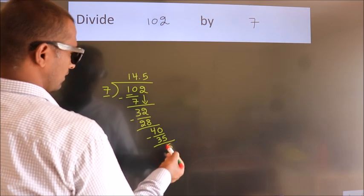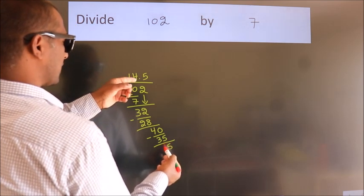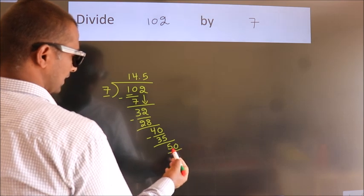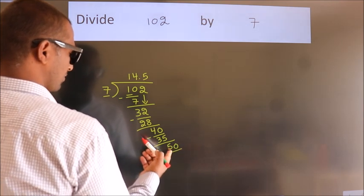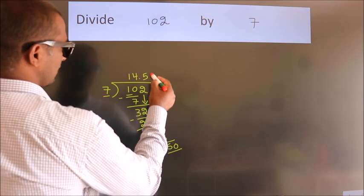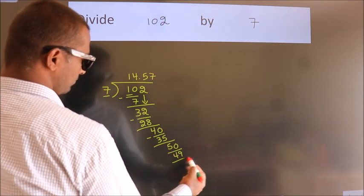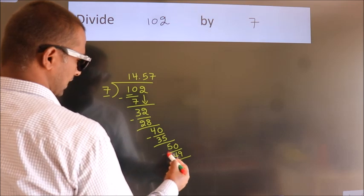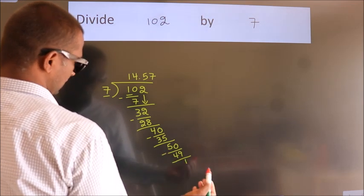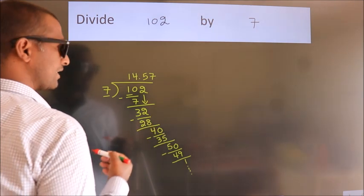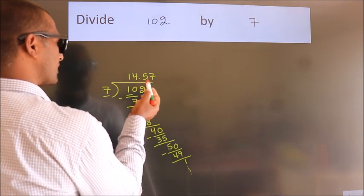After this, we already have the decimal, so directly take 0, giving us 50. A number close to 50 in the 7 table is 7 sevens 49. Now we subtract and get 1, and the division continues. It is enough if we do up to 2 decimal places.